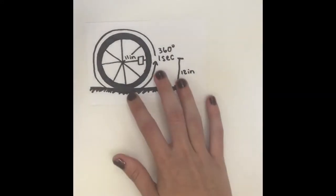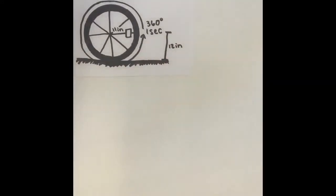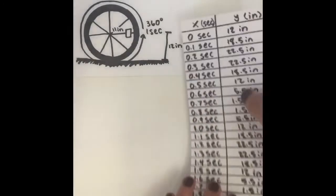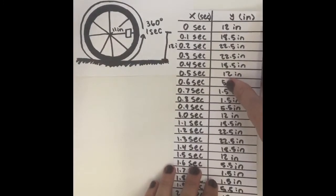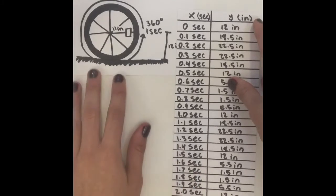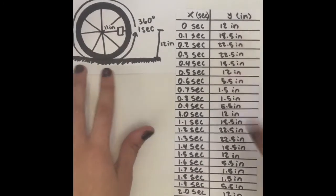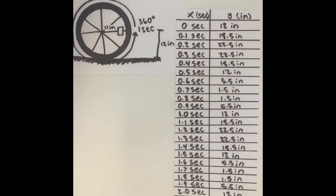The experimenters then perform the experiment. Here's the data points they found. The x values represent the time in seconds the wheel has been spinning and the y values represent how far off the ground the reflector is.